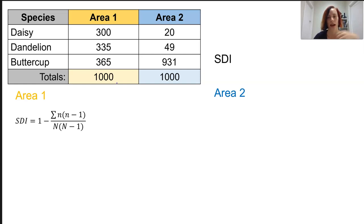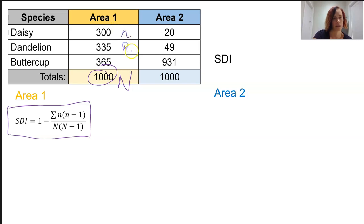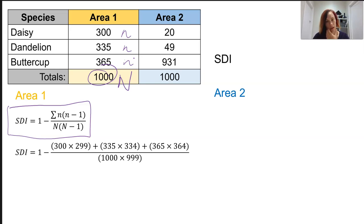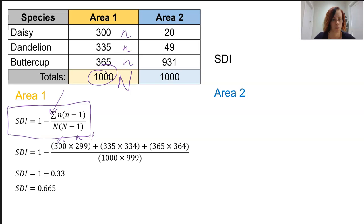If we go across to calculate our SDI, here is our formula and we need to become very familiar with it. SDI takes into consideration the numbers of each species as well as the total number of species together. Small n is the number of individuals of each species, and capital N is the total number of organisms of all species — the thousand. Here is some working I have prepared earlier. The sigma represents the sum of n multiplied by n minus 1. Taking the daisies: 300 times 299 plus 335 times 334. What we end up with is 0.665.